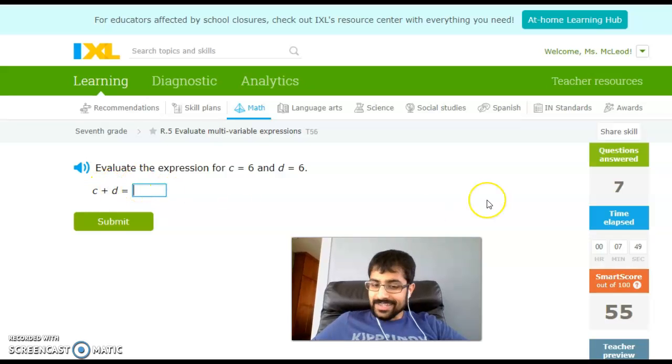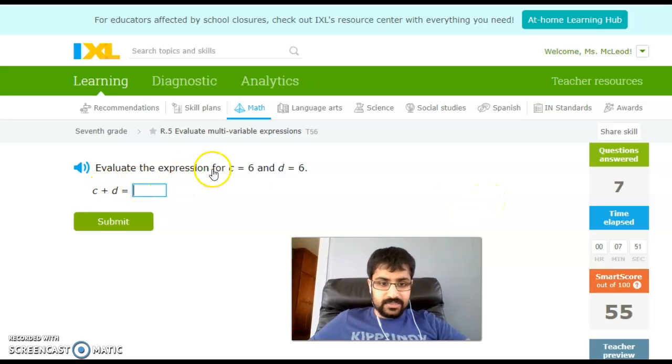This time we have addition. It's not really any more difficult. We haven't seen one yet. c is equal to 6 and d is equal to 6, and so I take 6 and I take 6 and I get 12.